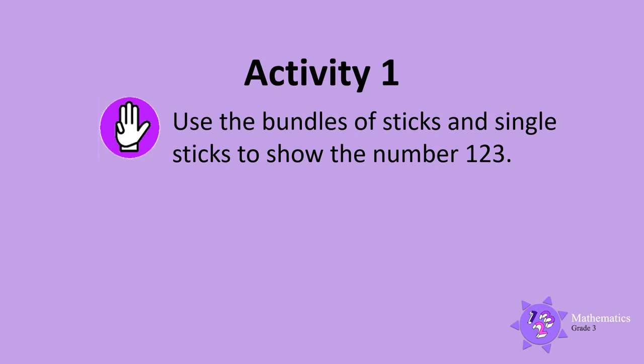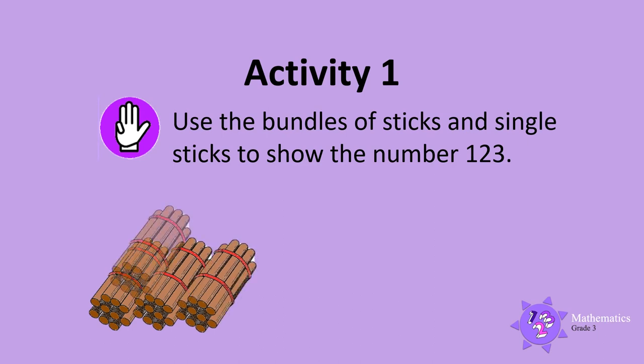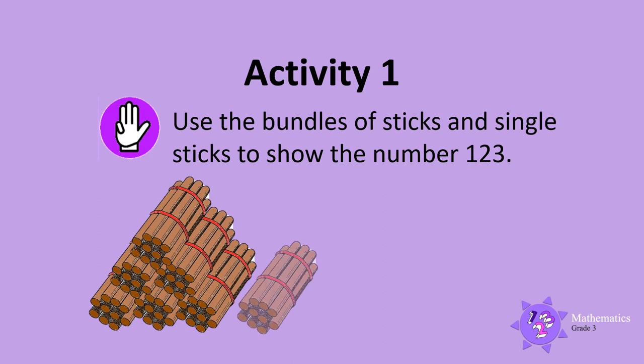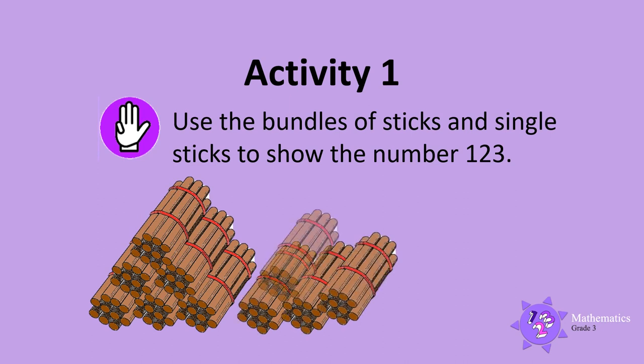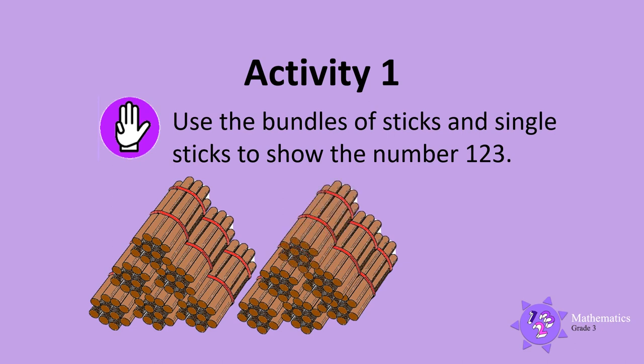Now let's use the bundles of sticks and single sticks to show the number 123. Remember, each bundle has 10 sticks. So we can first add bundles of 10 to get to 120, so let's count: 10, 20, 30, 40, 50, 60, 70, 80, 90, 100, 110, 120. Now we use the single sticks: 1, 2, 3. We now have 123 sticks. Great!